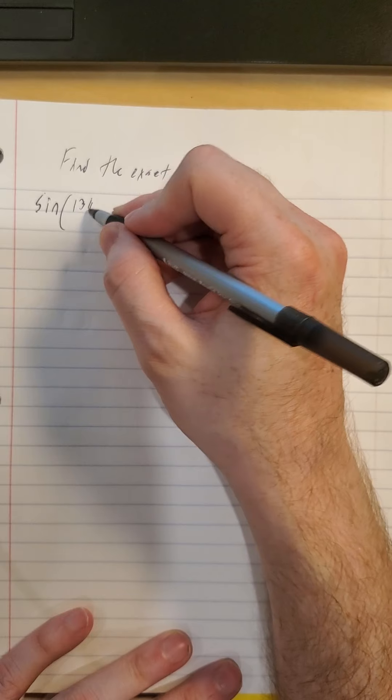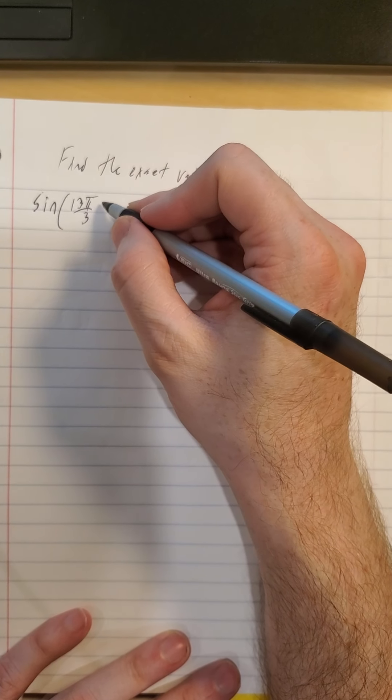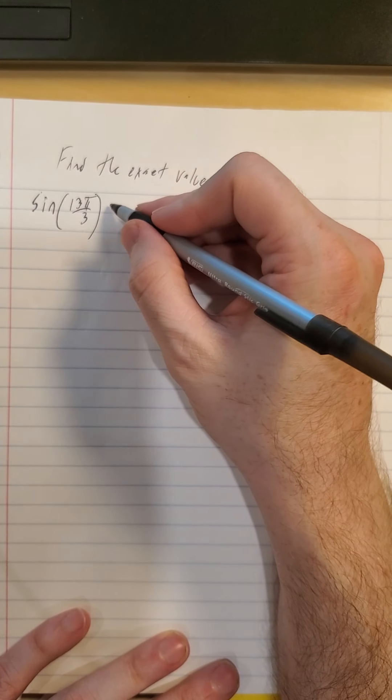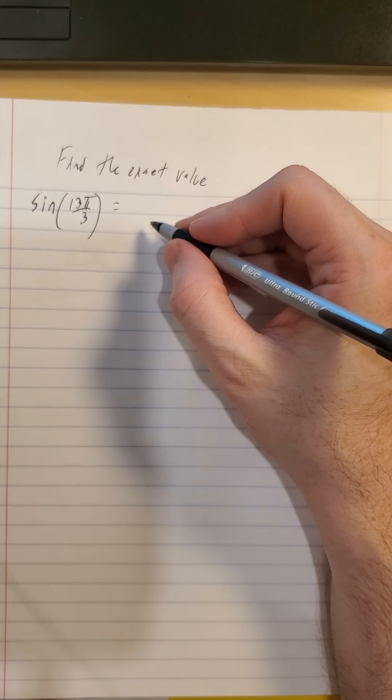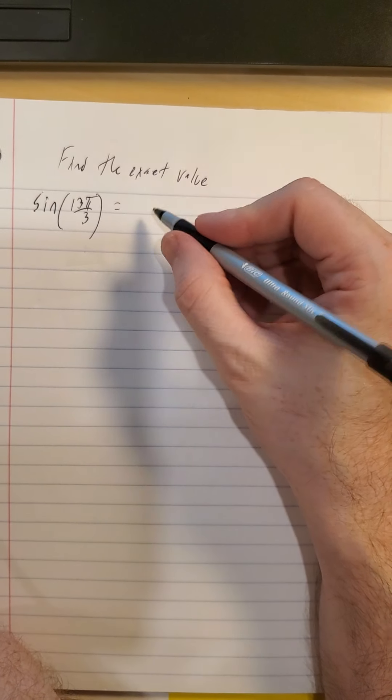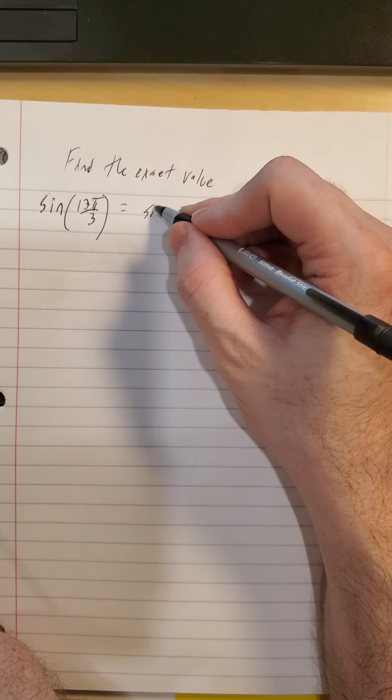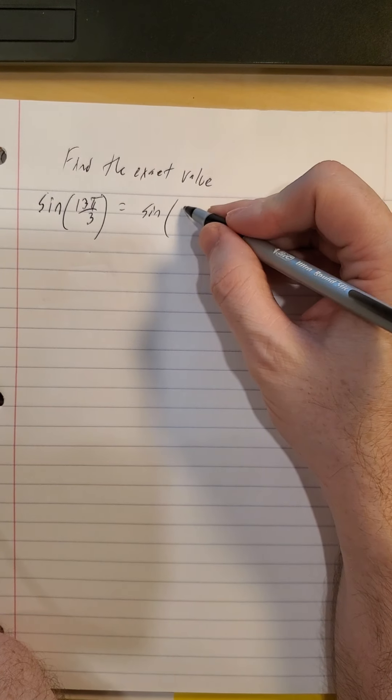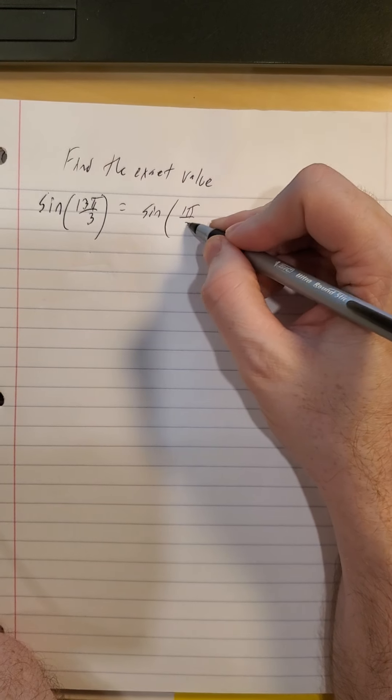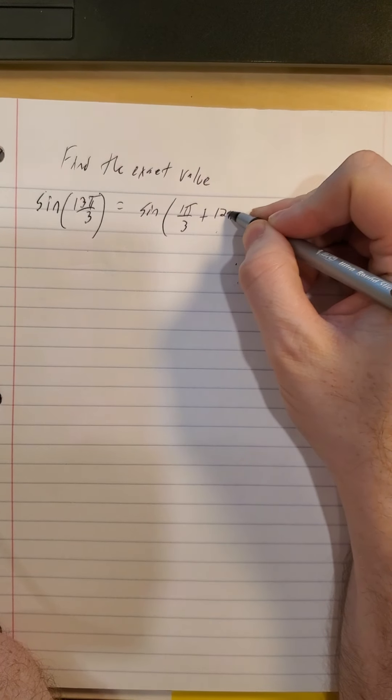We'll do the sine of 13π over 3. Well, 12 thirds is 4, which is an integer, so we'll turn this into the sine of 1π over 3 plus 12π over 3.